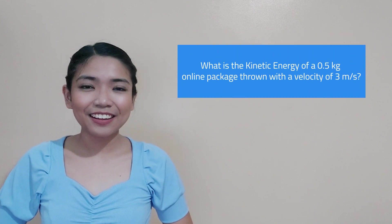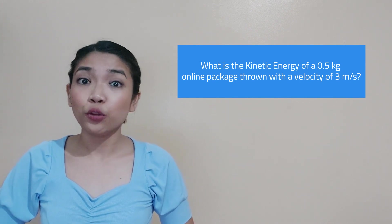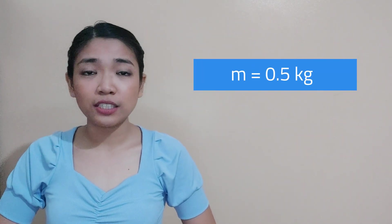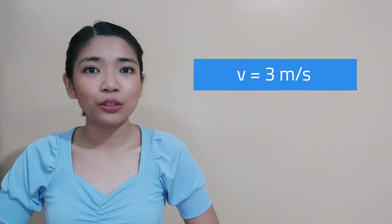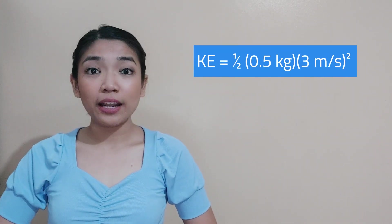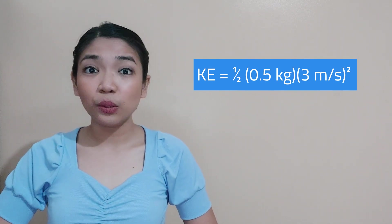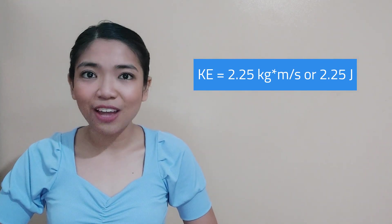Let's try solving a kinetic energy word problem together! What is the kinetic energy of a 0.5-kilogram online package thrown with a velocity of 3 meters per second? Our given are m = 0.5 kg and v = 3 m/s. Using the formula KE = ½mv²: ½ × 0.5 kg × (3 m/s)² = 2.25 joules.